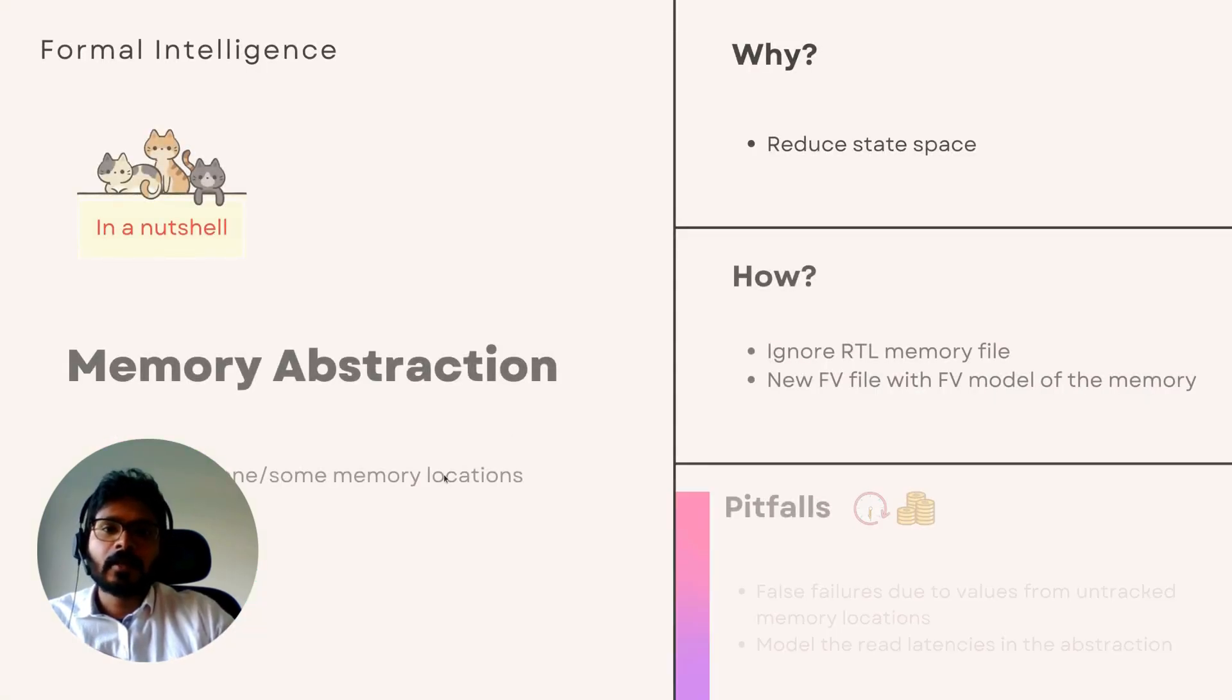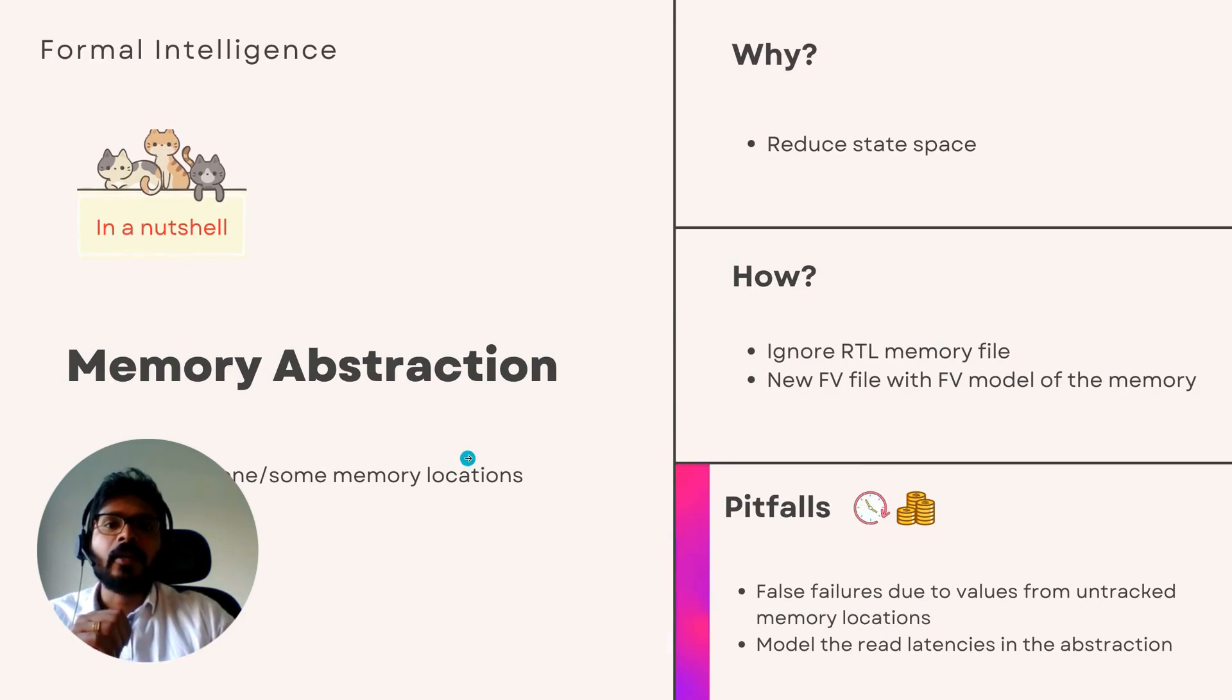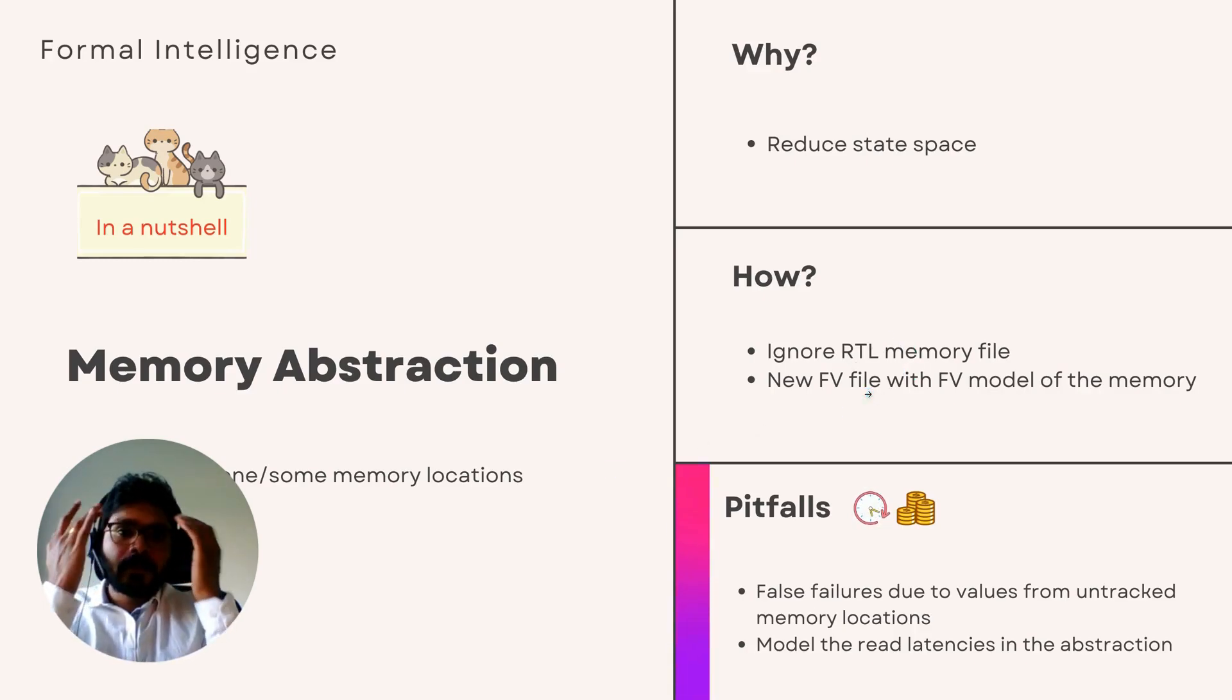Memory abstraction is a way of tracking only one or a few locations in the memory, irrespective of the number of locations in the original memory. We will discuss a case where we'll track only one location and not three or four locations, which is also another possibility for abstraction. One simple way to do this is to create a file with the abstracted memory model and use it in your formal runs and ignore the RTL memory altogether.